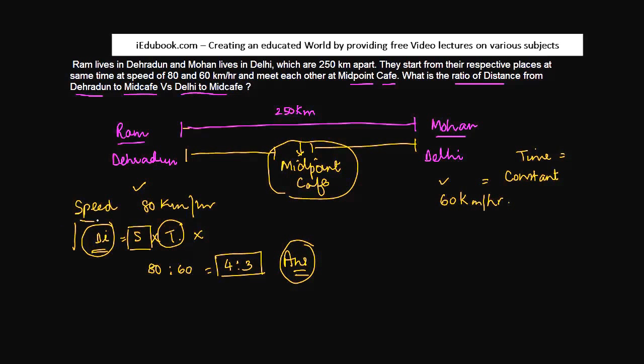Because they both started at the same time, the time is constant for both of them. If that be the case, then the value of the distance is going to be the same depending on the values which are assigned to speed.